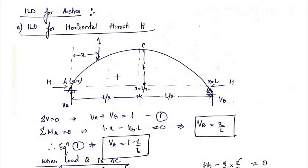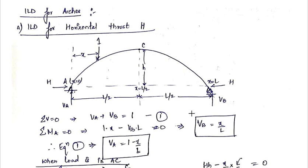There are two cases: when the rolling load is in part AC, and when it is in part BC. For both cases, the values of VA and VB remain the same, because we are measuring the distance x from support A regardless of which portion the load is on. We will now find the horizontal thrust H for each case.